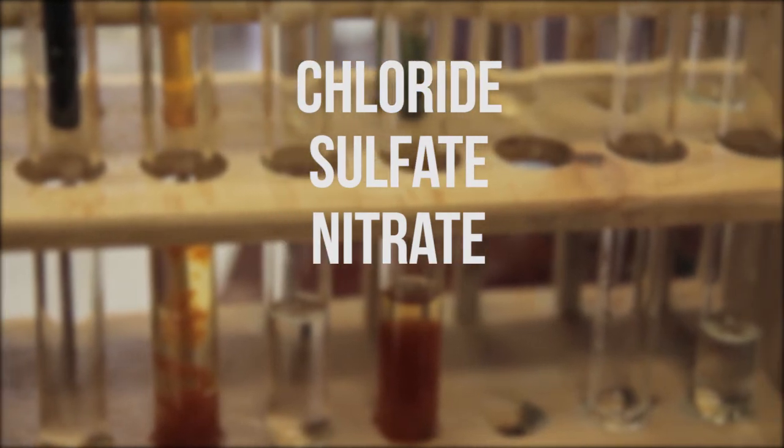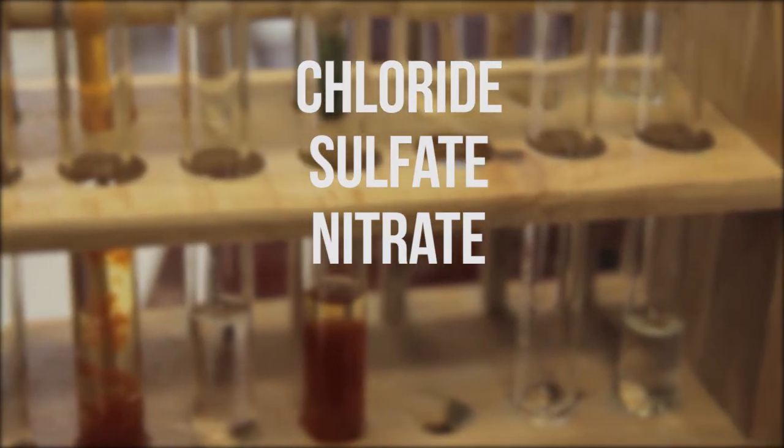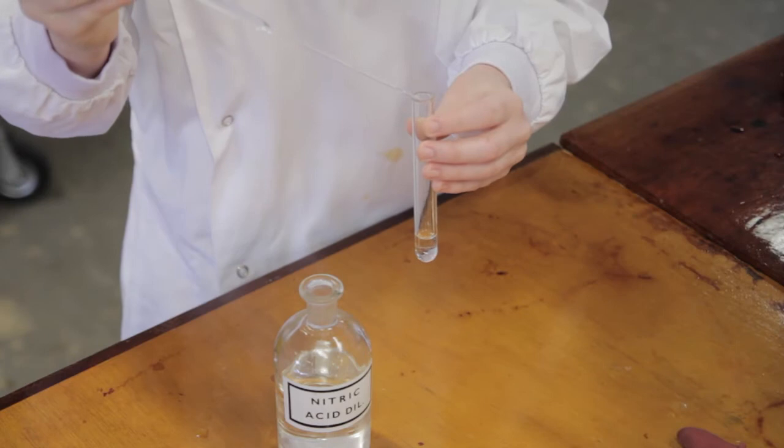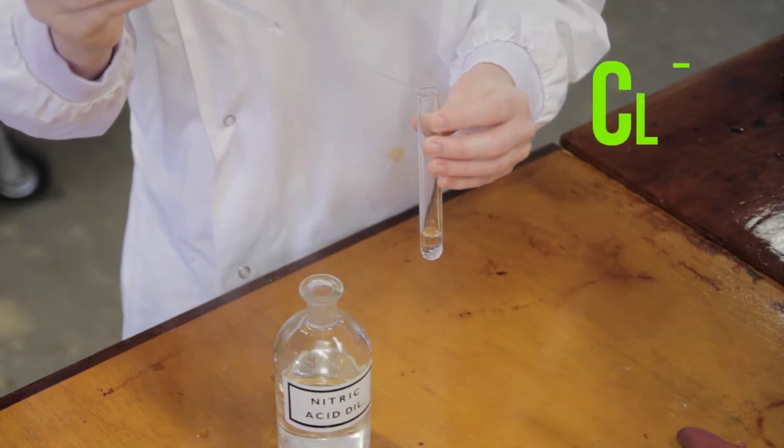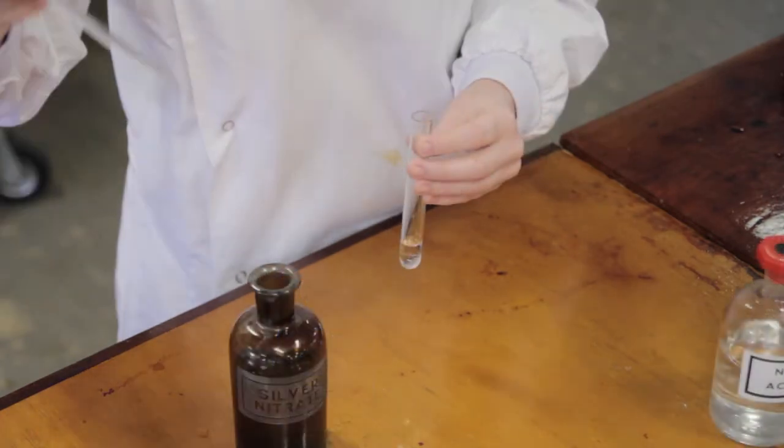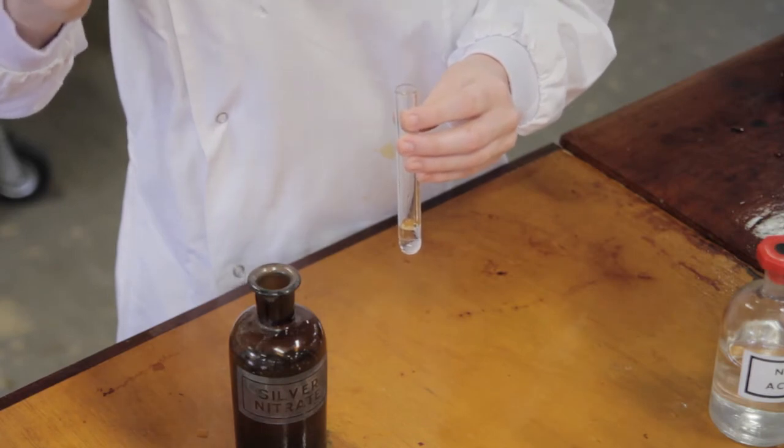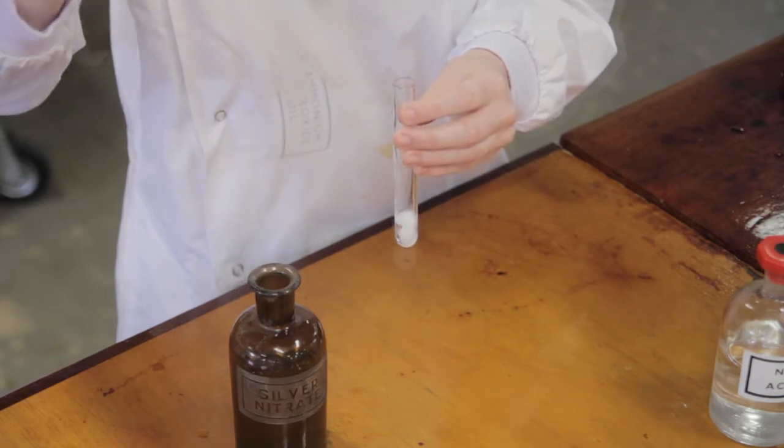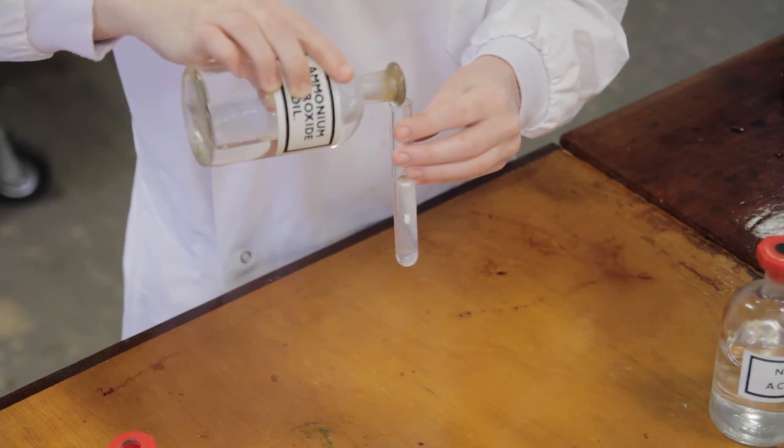They are straightforward because you only need to carry out confirmatory tests for each of them. The chloride anion Cl- is acidified with diluted nitric acid and then reacted with a couple of drops of silver nitrate solution. A white precipitate forms and can be dissolved in dilute ammonium hydroxide.